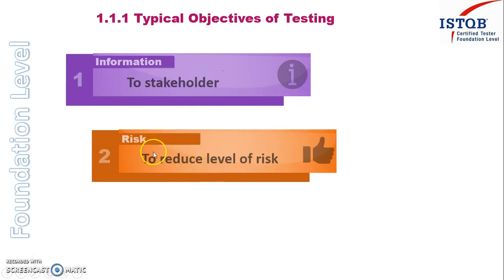The next objective is to reduce the level of risk. If our process is correct and we are doing well in our testing, we will reduce the risk of the product failing in operational use. By finding defects early, we reduce that risk. We cannot say we have totally avoided the risk, but by finding more defects we will reduce it.